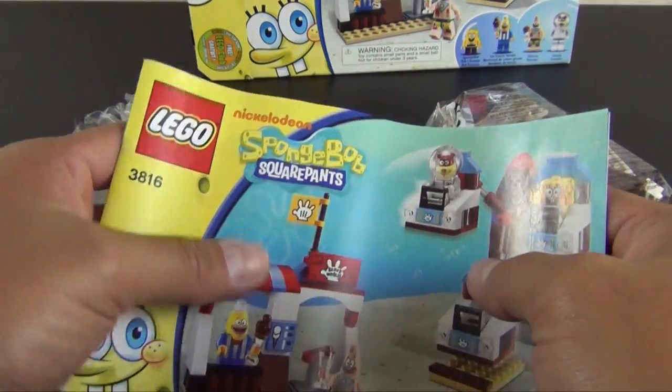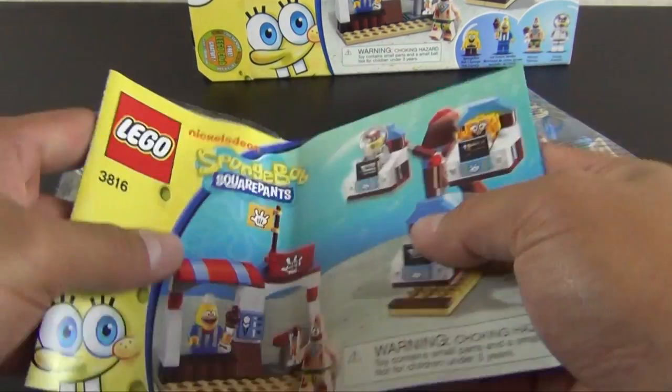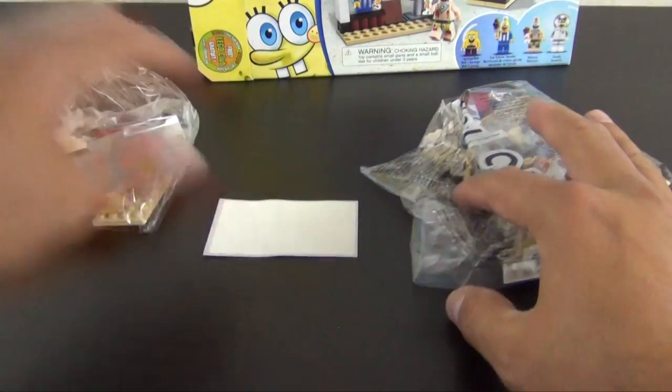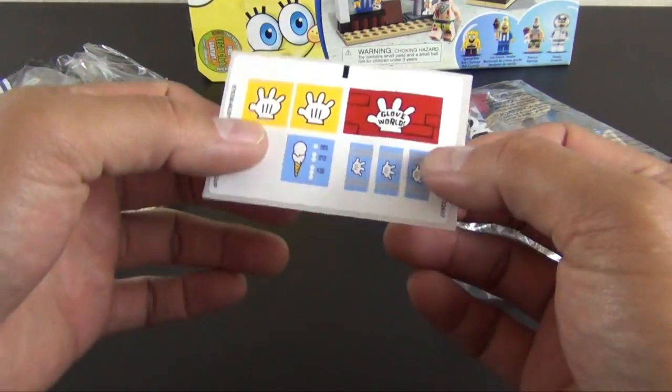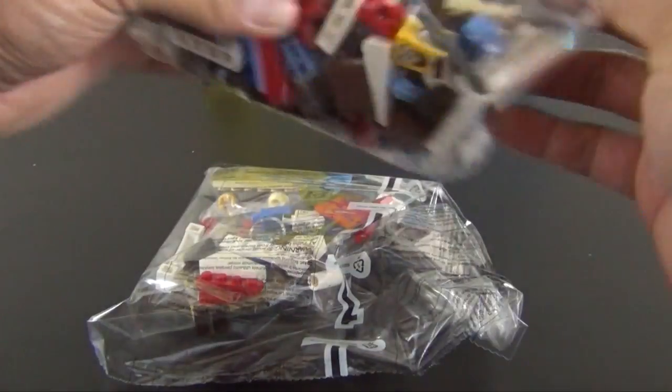We have a very thin single instruction book, it's kind of folded in half. I'm going to reverse fold it so it lays flat. I have a small sticker sheet with Glove World stickers on it. I have a bag one and a bag two.